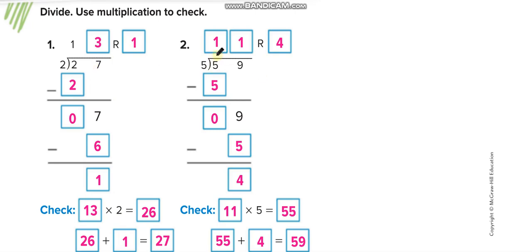Again, 1 by 1, 5 times 1 equals 5. 5 minus 5 equals 0. Bring the 9 down. 5 times what equals 9 or less? 5 times 1 equals 5. 5 times 2 equals 10, which is more than 9. We can't take that. So 5 times 1 equals 5. 9 minus 5 equals 4. The remainder is 4. To check, 11 times 5 equals 55, plus 4 equals 59. The dividend is 59. So our answer is correct.